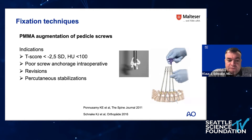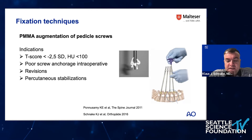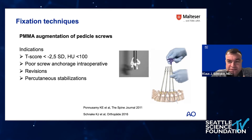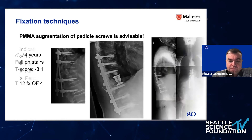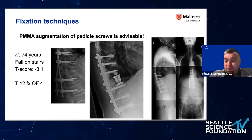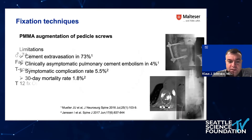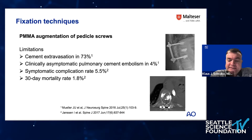The indications for cementing screws are: T-score less than minus 2.5, Hounsfield units below 100, poor screw anchorage felt intraoperatively, revision surgeries, corrections such as post-traumatic kyphosis, and percutaneous stabilizations — because percutaneously you have no tactile feedback on bone quality when placing screws. In the revised case, we performed anterior-posterior surgery with screw augmentation.